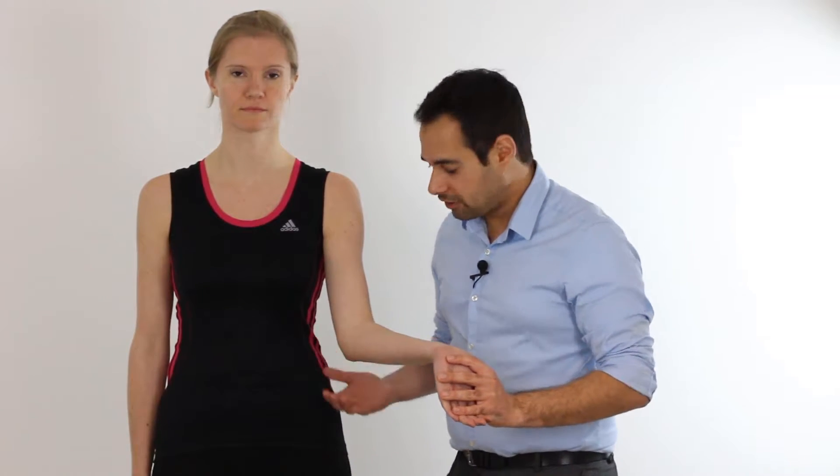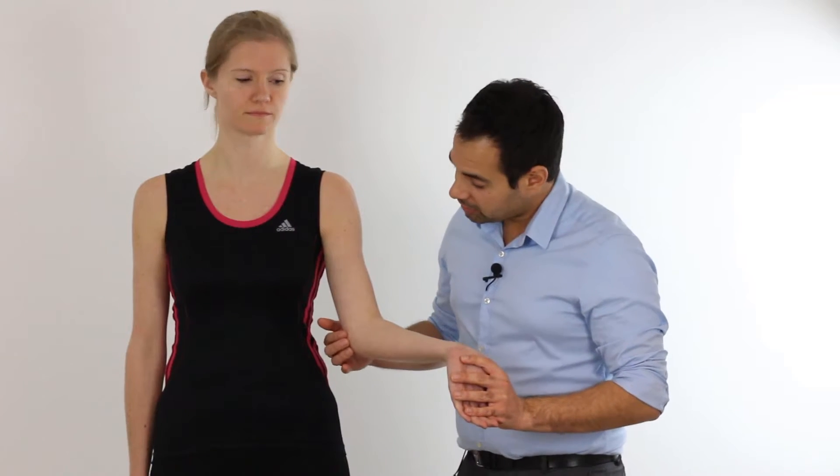A positive outcome in this test would be the reproduction of symptoms around the medial epicondyle or just distal to that, as we said, which is where the common flexor tendon of the wrist and fingers is located.